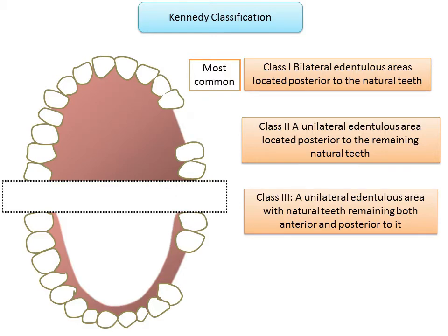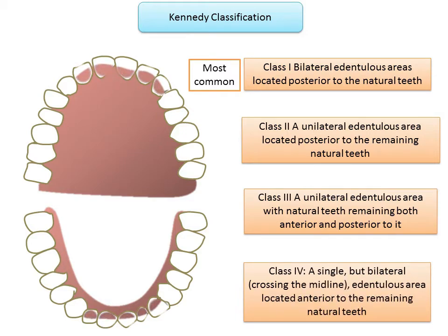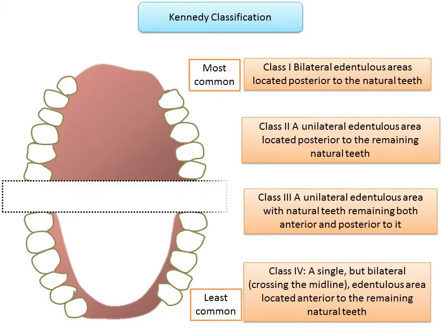Class 3 is the least common variety; according to Stratton, the incidence in the maxilla is about 40 percent and in the mandible 25 percent. Class 4 represents a single bilateral edentulous area located anterior to the remaining natural teeth — it crosses the midline of the arch with remaining teeth present only posterior to it. It is the least common variety, with incidence in the maxilla of 5 percent and in the mandible 2 percent. Notably, Class 4 does not have any modifications.